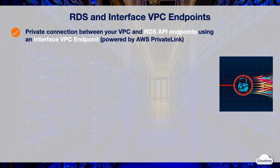You can establish a private connection between your VPC and RDS API endpoints using an interface VPC endpoint that is powered by AWS PrivateLink. PrivateLink enables you to privately access RDS API operations from a VPC, without an internet gateway, NAT device, VPN connection, or AWS Direct Connect connection.